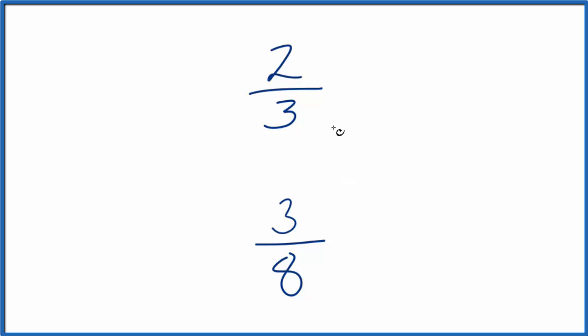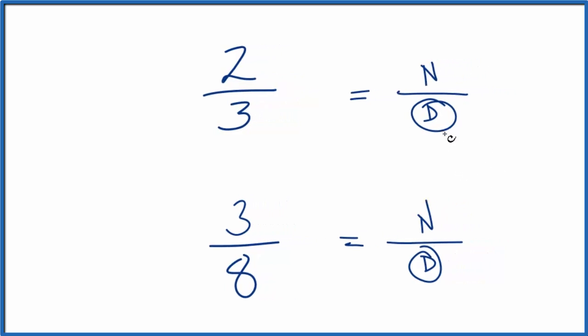First, we could try to find a common denominator for both of the fractions here. Denominator, that's the number on the bottom. So if we can get this number to be the same, then the numerator, we can just compare those, and whichever numerator is bigger, that's the larger fraction. So let's try that first.